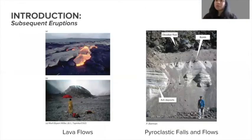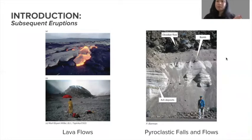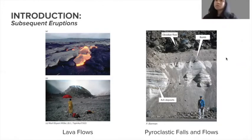Moving on to volcanic products — these are basically the agents of change in geomorphology. We have lava flows, which can differ based on viscosity and magma composition. More mafic flows travel further, whereas more felsic magma can create things like domes — as shown in the bottom image — which are shorter and don't travel as far. And then you have falls and flows, which can travel further because they go up into the air and can impact more long-distance landscapes.